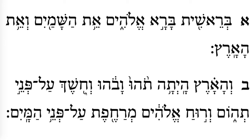The tipcha is a soft separator, so you can take a breath there if you have to. But munach is definitely a connector, so you shouldn't take a breath between the munach and the etnachtah. So: ve-choshech al-penei tehom. And then there is a munach and katon — the spirit, the ruach of Elohim — that's one thought. Munach katon: ve-ruach Elohim.